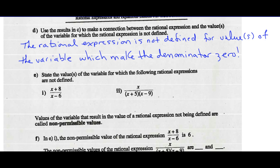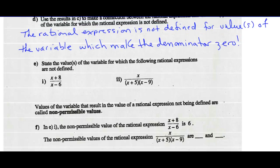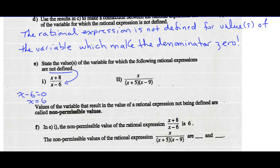State the value or values of the variable for which the following rational expressions are not defined. We're only looking at the denominator — not the numerator, just the denominator. So I take my denominator and ask: when does x minus 6 equal 0? We can't have the denominator equal 0. That's a pretty simple equation to solve. If I add 6 to both sides, that occurs when x equals 6. So when x equals 6, this expression is undefined.